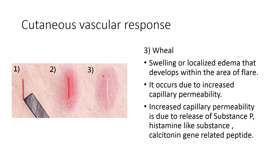The wheal is swelling or localized edema that develops within the area of flare. It occurs because of increased capillary permeability due to the release of substance P, histamine, and calcitonin gene-related peptide. This increased permeability causes transudation of protein-containing fluid out of the capillary, producing localized edema.